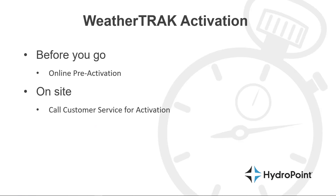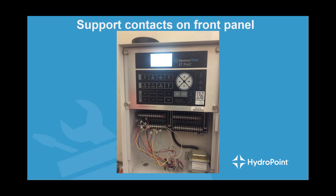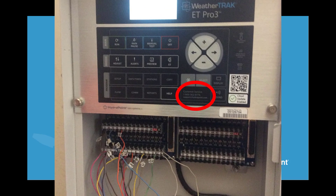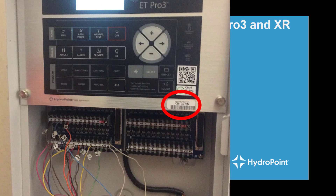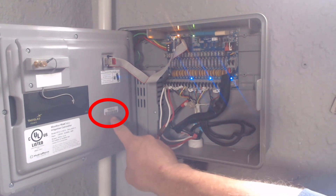If you use online pre-activation, as soon as you power up the controller during installation it will come online almost immediately. If you're already on site, you can call the HydraPoint customer service team at 1-800-362-8774, where you'll find a team of Spanish-English bilingual customer support agents ready to activate your controllers Monday through Saturday. This is by far the most common way to activate controllers, as the agent can get the controller online in real time. Note that the customer support contact information is printed on the front panel. For a Pro 3 or XR, the serial number is on a sticker on the front of the panel; for an LC, the serial number is usually on the back of the panel, so you'll need to open the panel door.